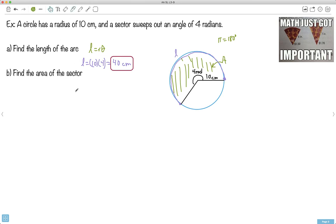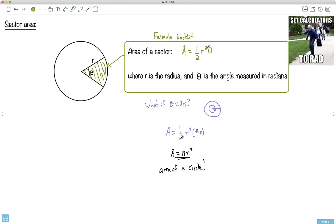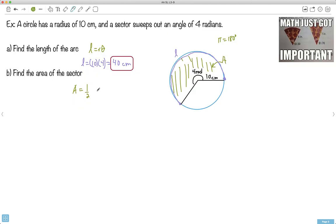A equals one half. And then remember how it goes here. It goes R squared theta. So I'll write it down. R squared theta. So in my case, then, let me do it maybe in black here. So area equals one half times R, which is 10. So it's 10 squared times theta, which is 4.